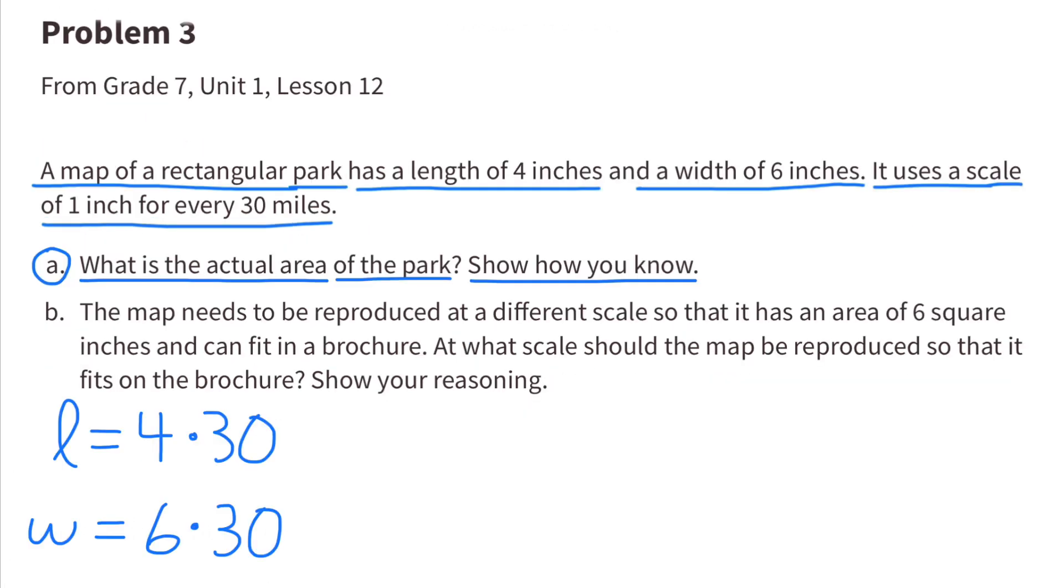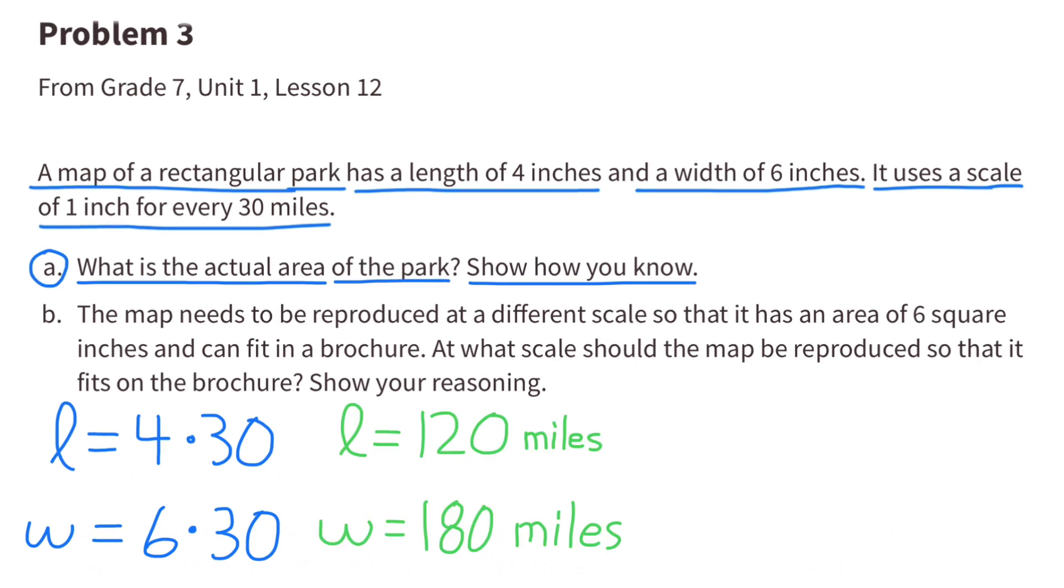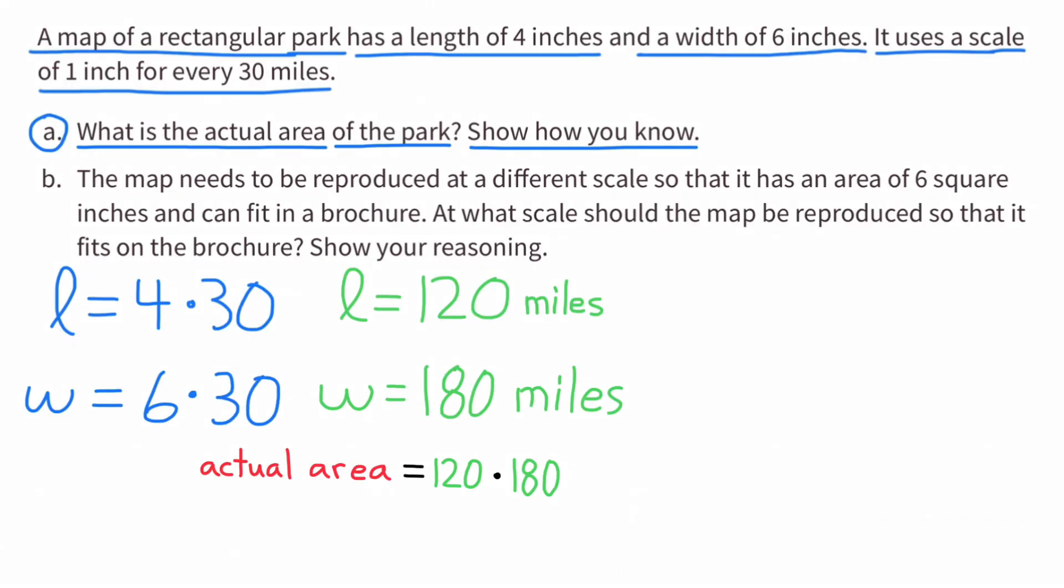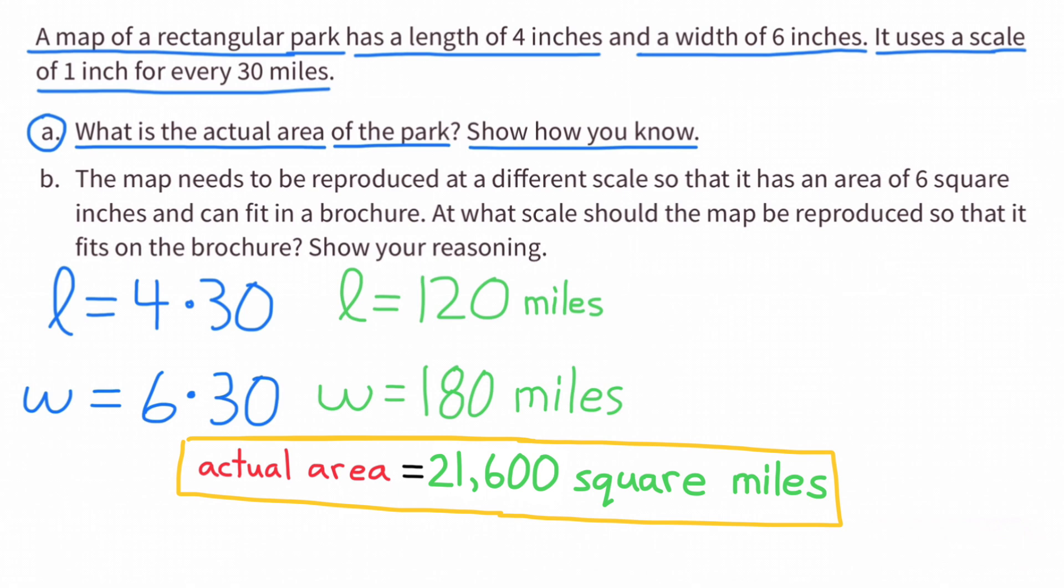On the scale drawing, or on the map, the length is 4 inches and the width is 6 inches. Since it uses a scale of 1 inch for every 30 miles, the length of the actual park is 4 times 30 and the width is 6 times 30. The length of the actual park is 120 miles and the width is 180 miles. To find the area, we multiply length times width, or 120 miles times 180 miles. The actual area of the park is 21,600 square miles.